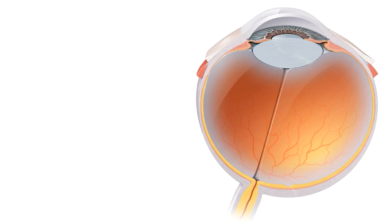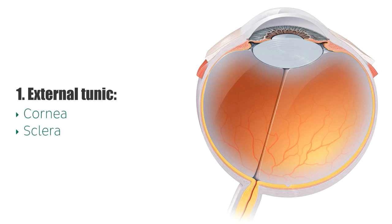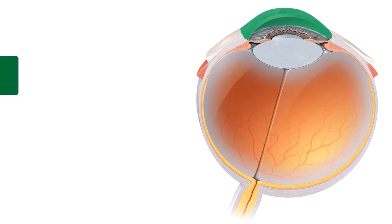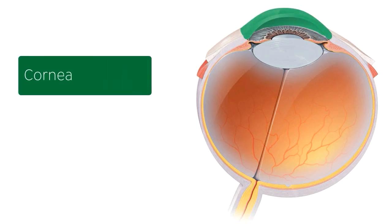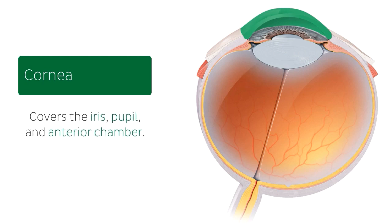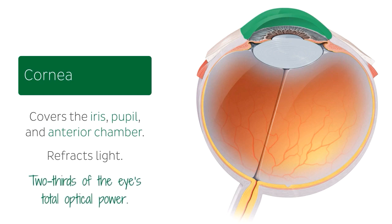Starting with the external tunic, which as you remember is comprised of the cornea and the sclera. The cornea is the transparent front part of the eye that covers the iris, the pupil, and the anterior chamber, which I can show you here. The cornea, together with the anterior chamber and the lens, refracts light, and the cornea accounts for approximately two-thirds of the eye's total optical power.